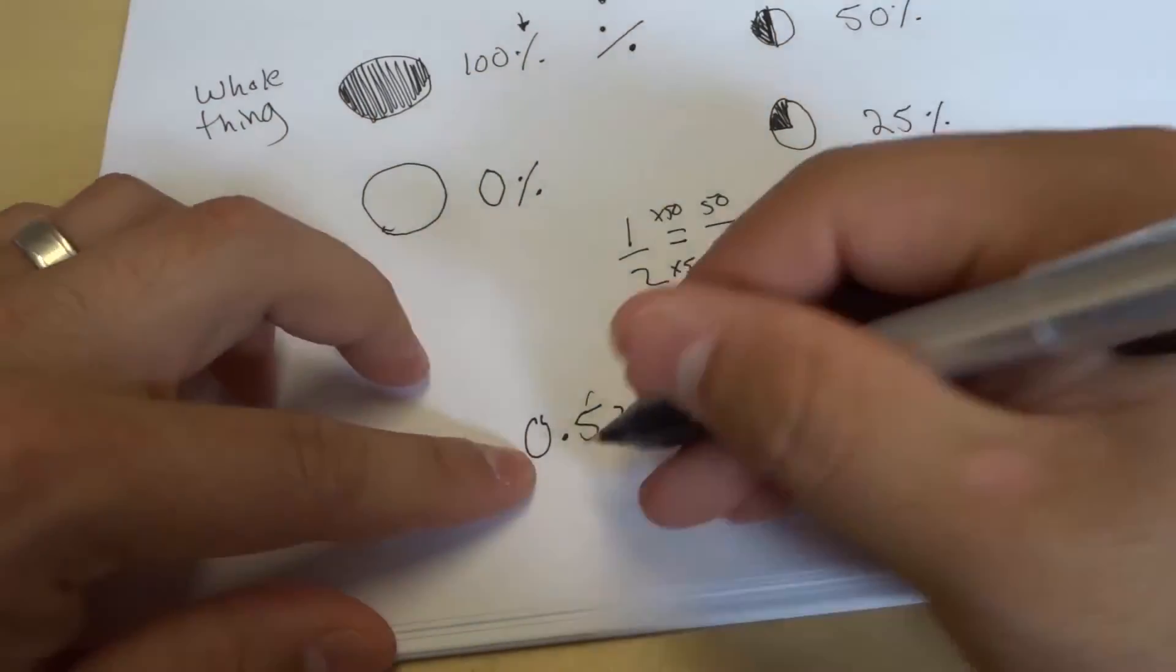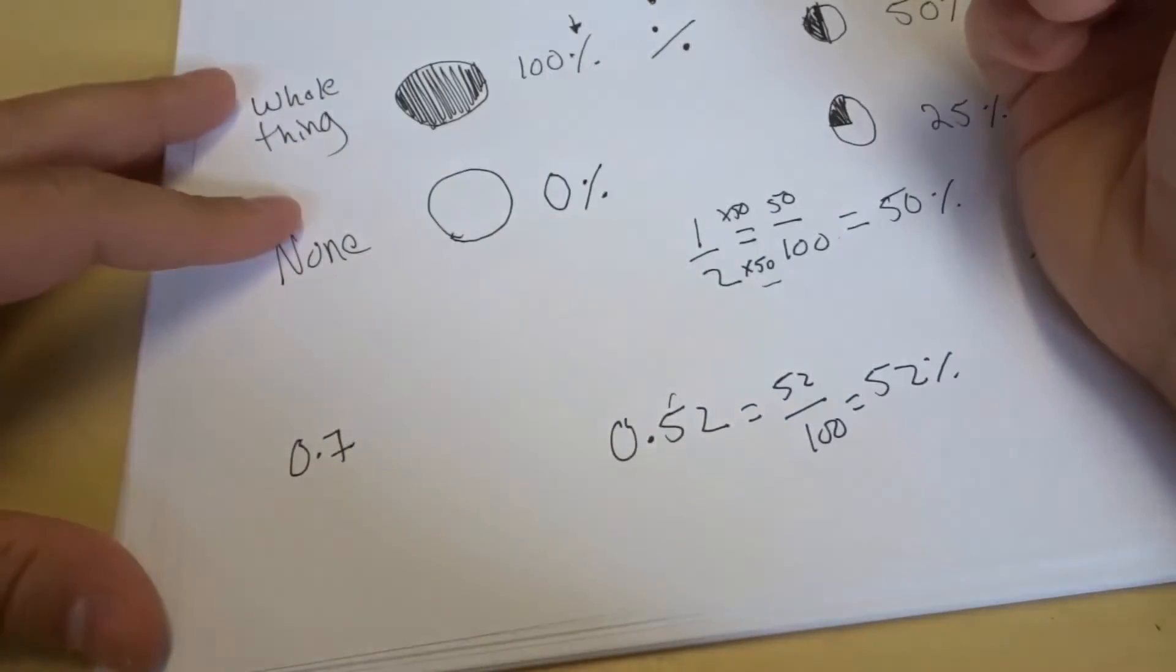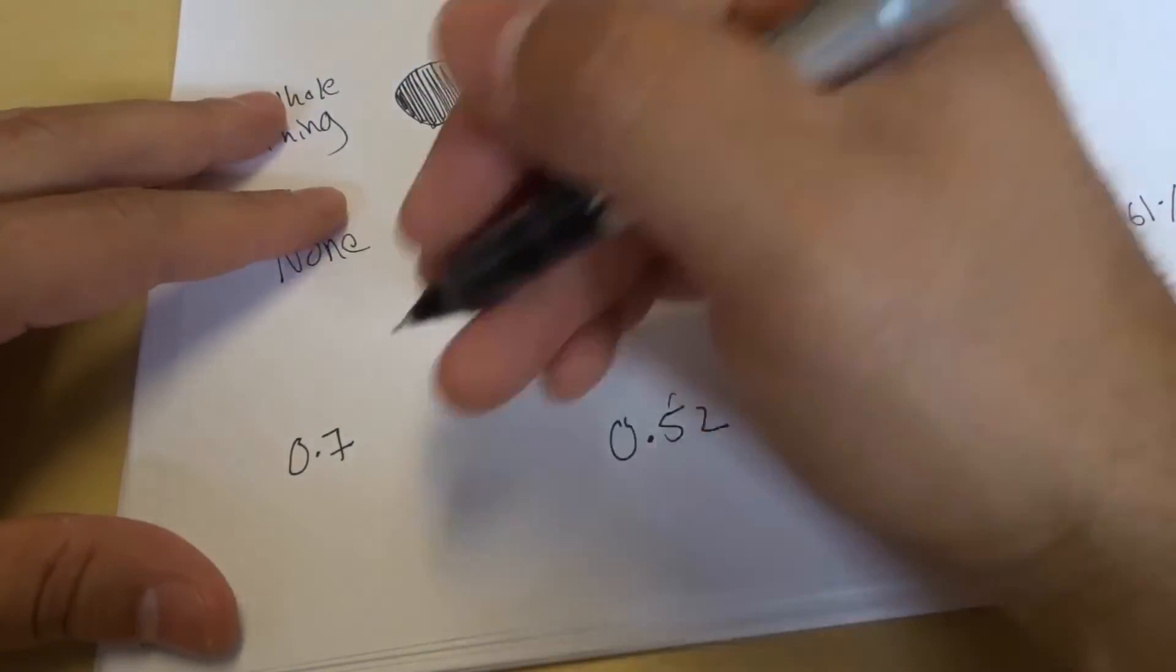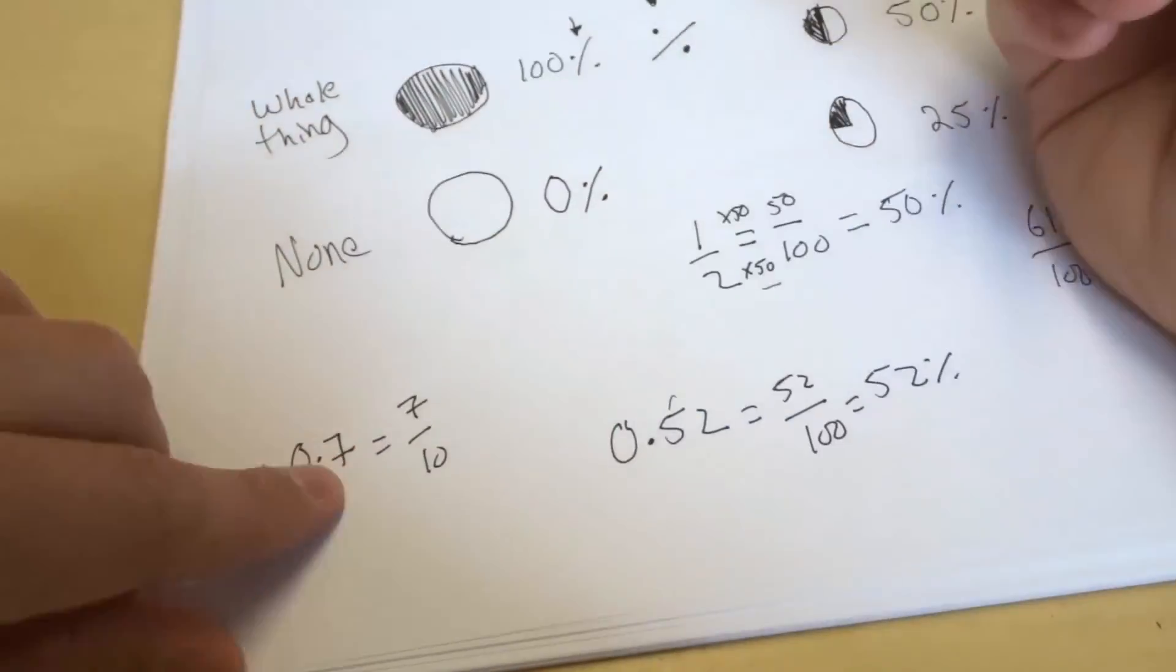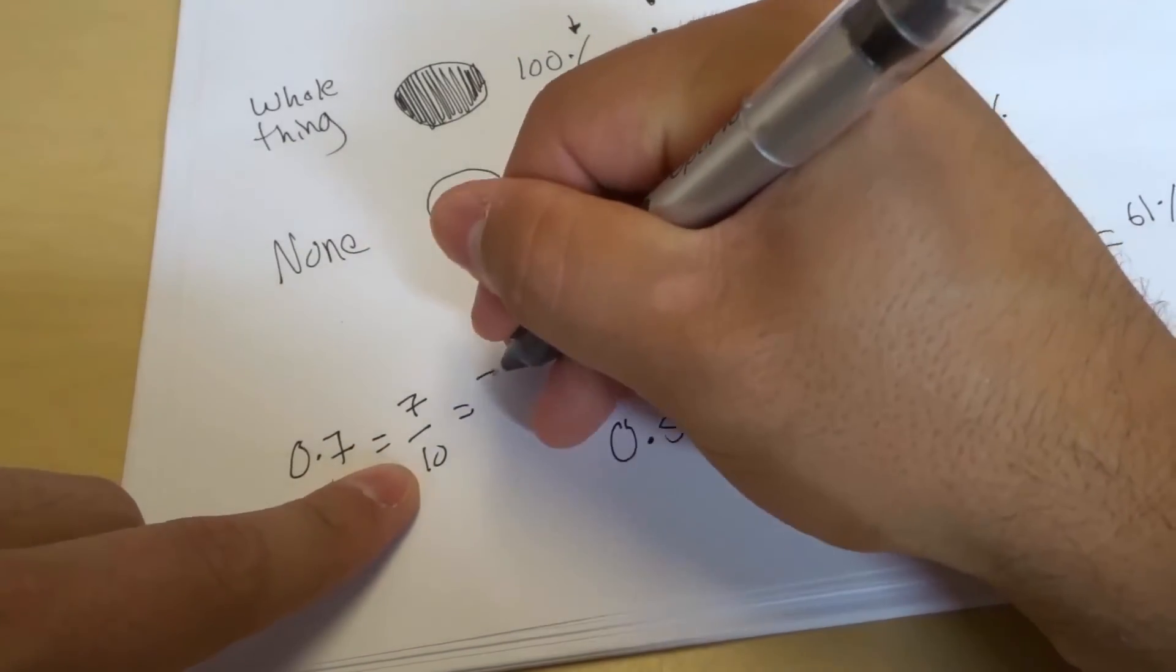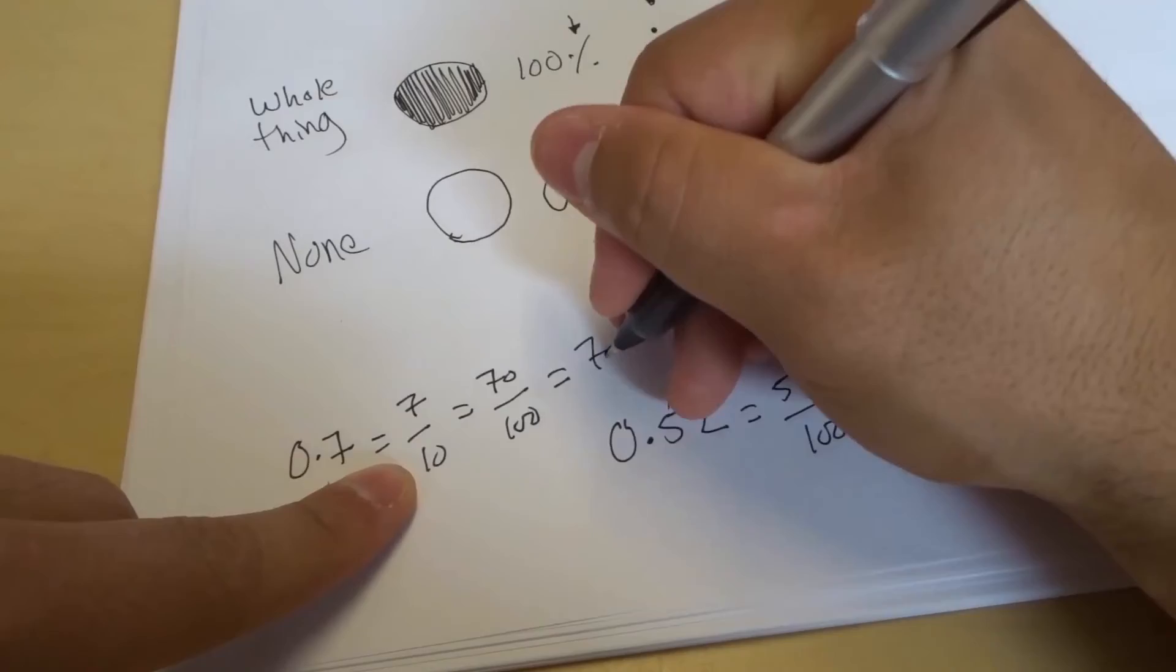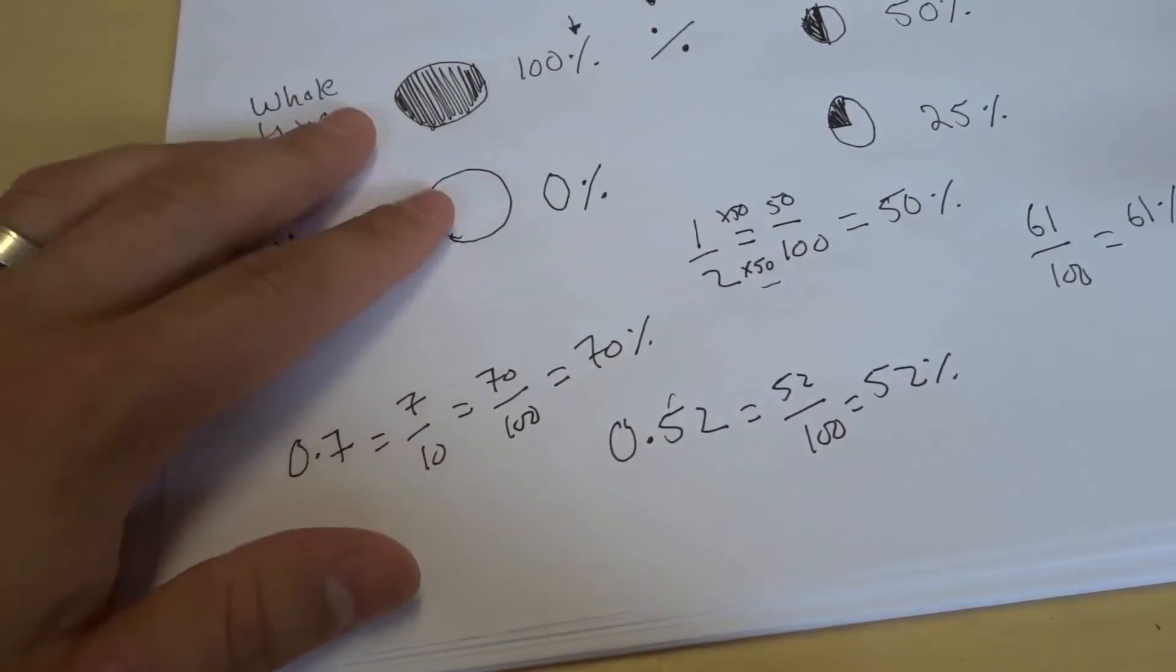Now let's say you only have one digit after the decimal. Let's say you have 0.7. Well, 0.7 is the same as 7 out of 10, because there's only one digit after the decimal, which is the same as 70 out of 100, which is the same as 70%.